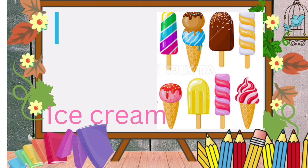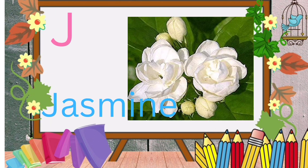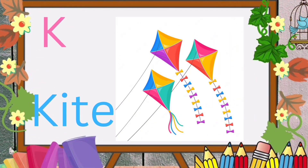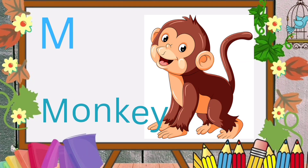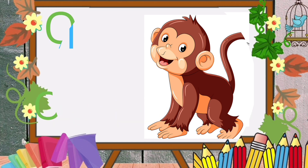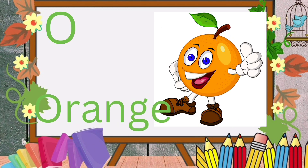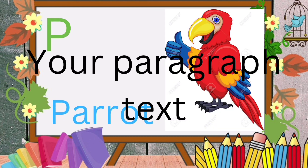I for ice cream. J for jasmine. K for kite. L for lion. M for monkey. O for orange. P for parrot.